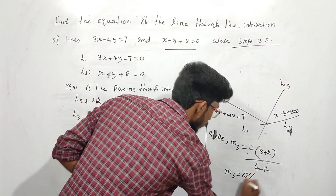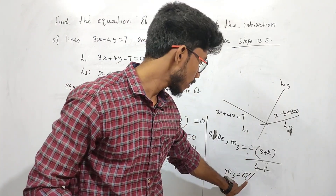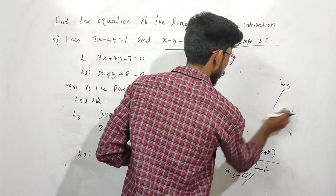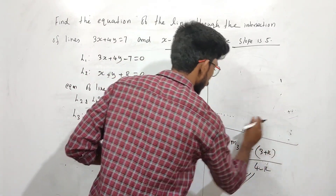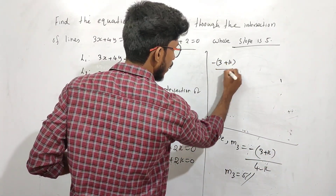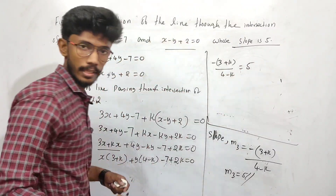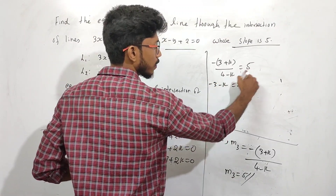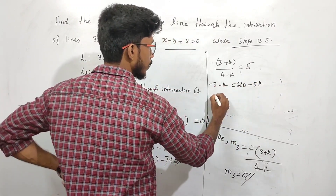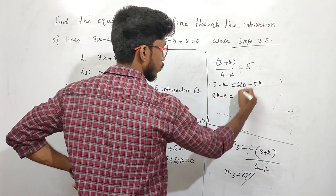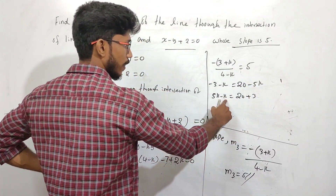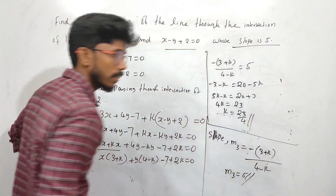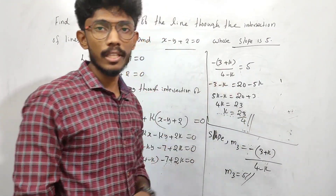The slope of L3 is given as 5. So minus (3 + k) divided by (4 - k) equals 5. Solving: minus 3 minus k = 20 minus 5k. So 5k minus k = 20 plus 3. Therefore 4k = 23, which gives k = 23/4.